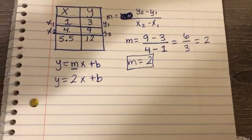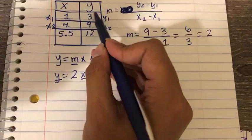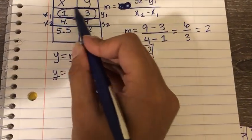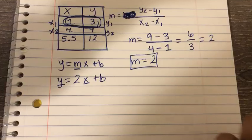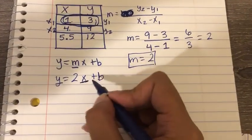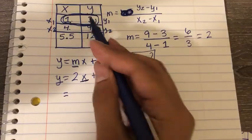Now I'm going to replace x and y with an ordered pair from the table. And I'm going to choose the very first one. So the ordered pair is 1, 3. Alright, so the x value is 1, and the y value is 3.